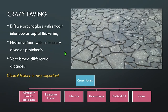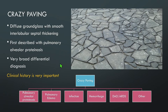Moving on to crazy paving. Crazy paving is diffuse ground glass with intervening smooth interlobular septal thickening, named because it resembles crazy paving patterns seen in landscaping. This was first described with pulmonary alveolar proteinosis, but it has a very broad differential diagnosis, so clinical history is very important. Causes include pulmonary alveolar proteinosis, pulmonary edema, infection, hemorrhage, diffuse alveolar damage, and others.